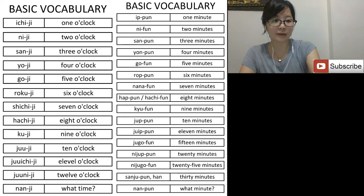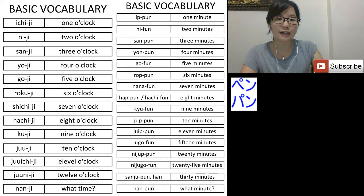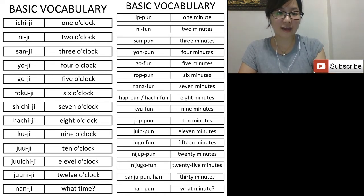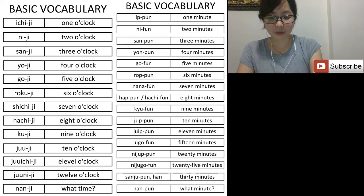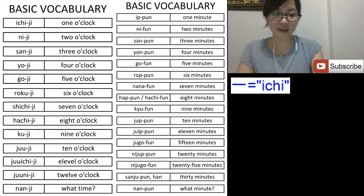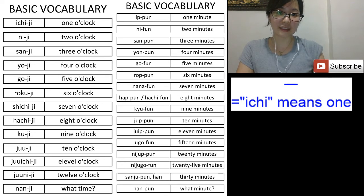We can also say 'pan', which means bread. Pan comes from a Latin language, so again it's a foreign word and we use katakana. Kanji has two or more different ways of pronunciation. For example, this character means 'one' — the pronunciation is 'ichi', meaning one.